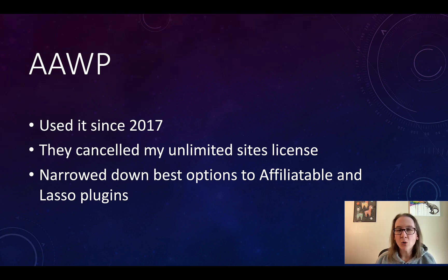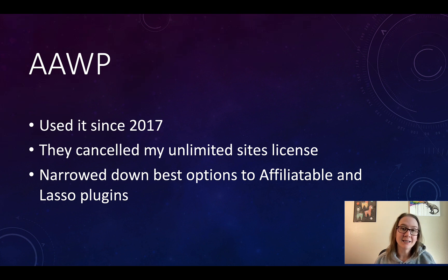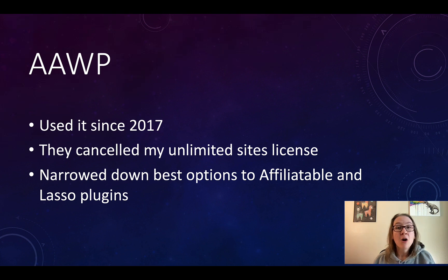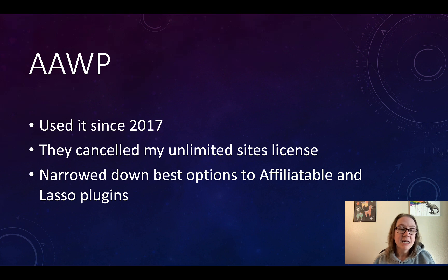They tried to gaslight me and tell me that I only had a license for 10 sites. I wasn't going to accept that answer. Finally, they agreed that I did have a license for unlimited sites. Then three hours later, I got an email telling me that my license subscription had been canceled. So ever since then I've been looking at what my best option is — other than AAWP — in terms of conversion. I narrowed it down to the Lasso plugin and the Affiliate Table plugin, and that's what I was testing against AAWP across my sites.